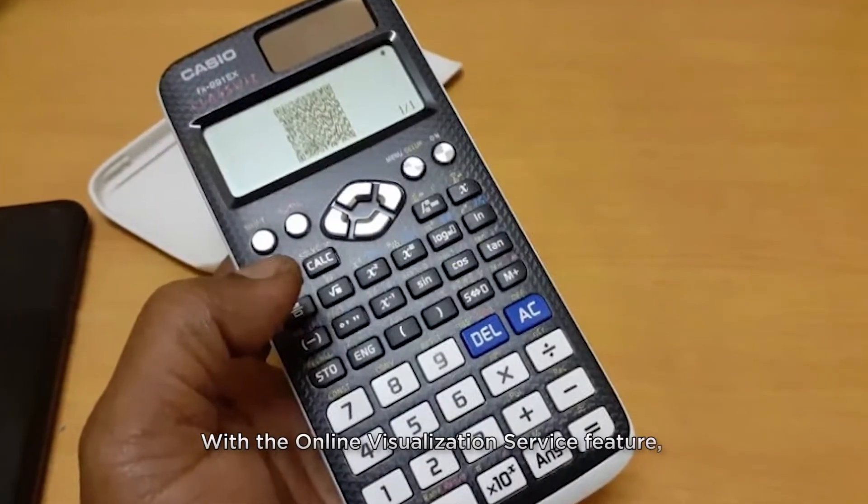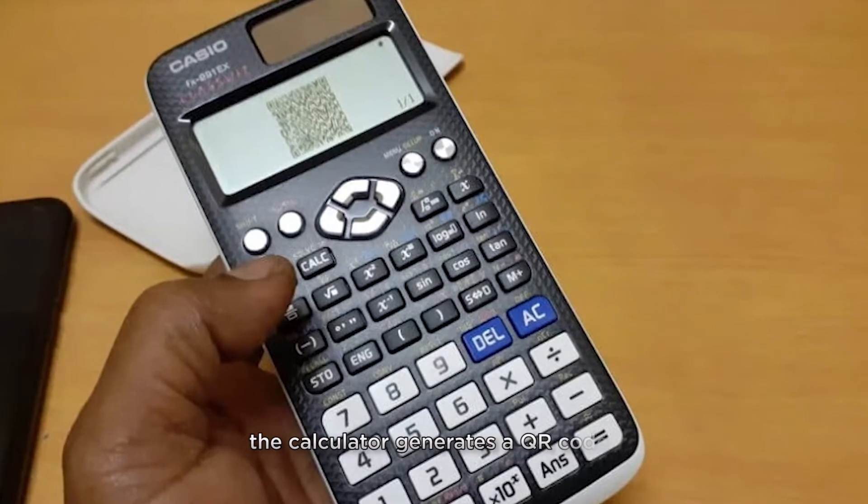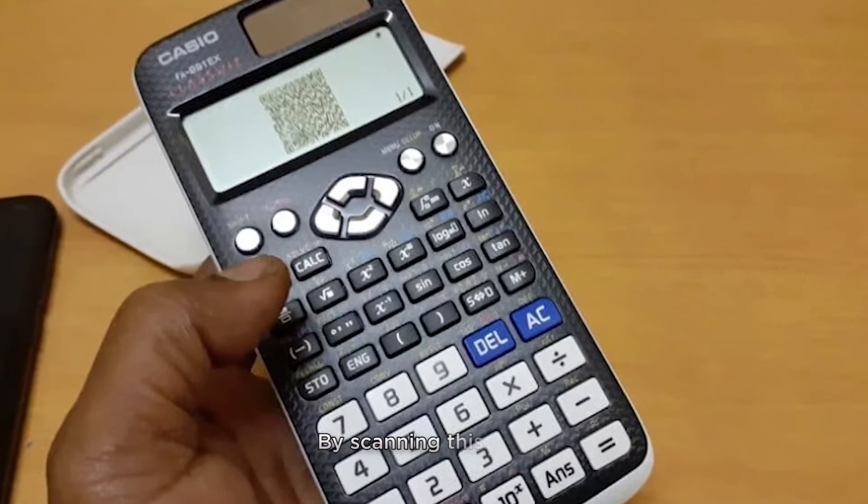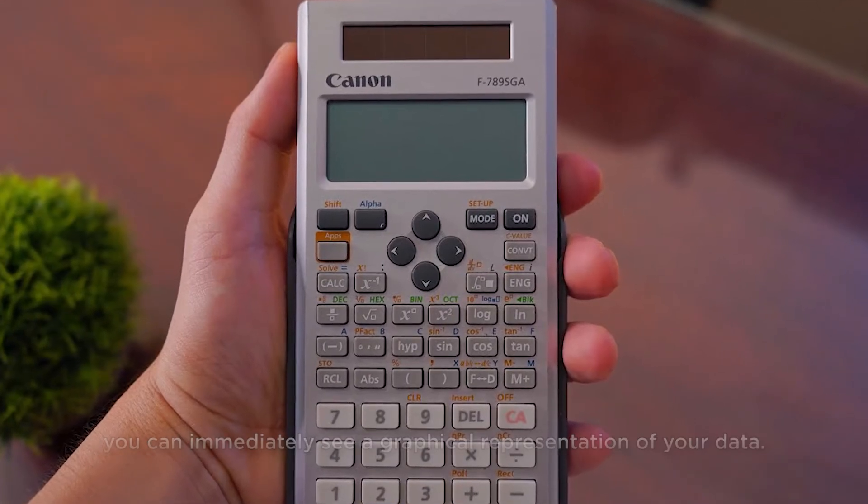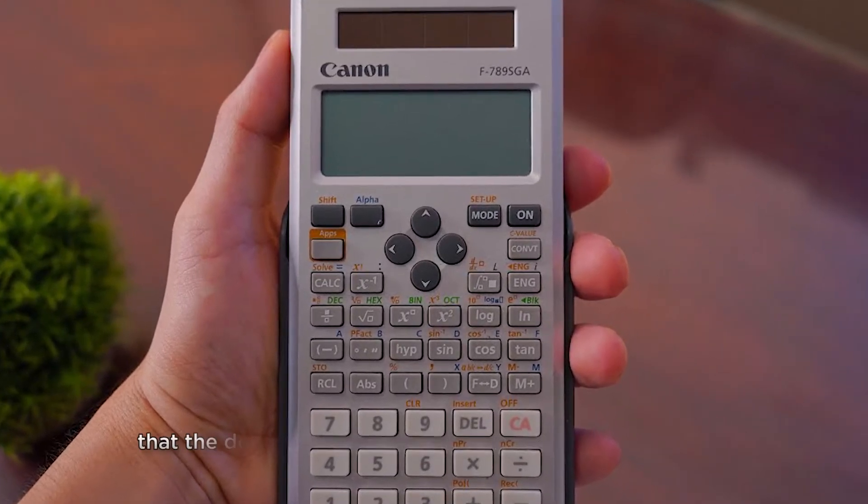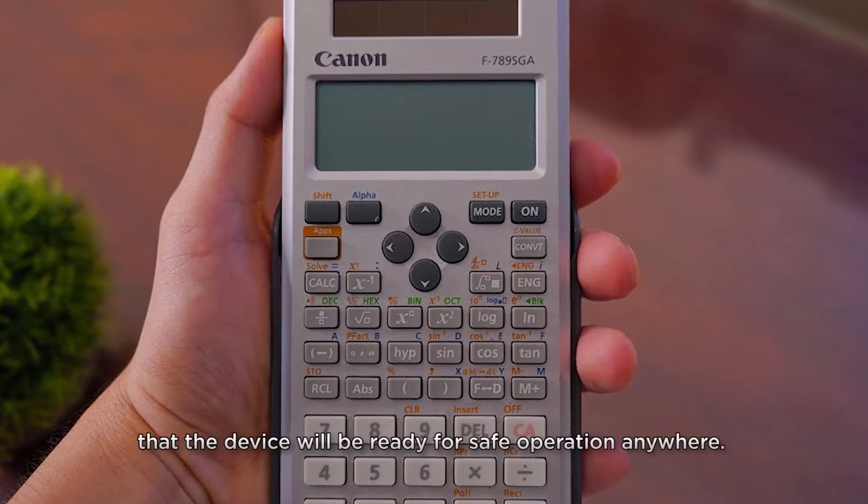With the online visualization service feature, the calculator generates a QR code. By scanning this code, you can immediately see a graphical representation of your data. Two-way power assures you that the device will be ready for safe operation anywhere.